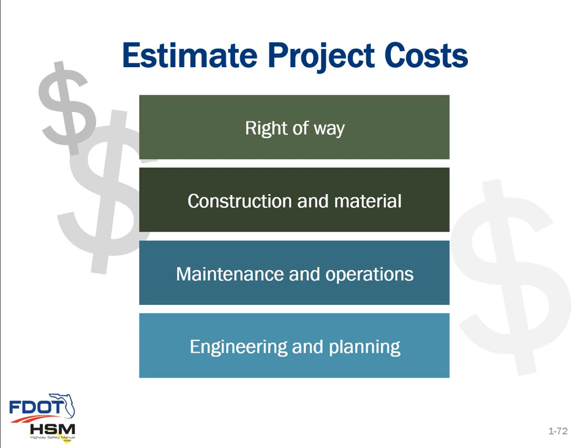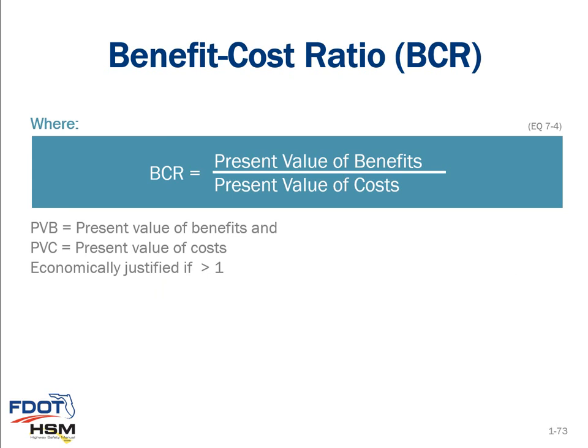Estimating project cost — the denominator of the benefit-cost ratio — includes elements such as right-of-way, construction and materials, maintenance and operations, and engineering and planning. The benefit-cost ratio is the present value of benefits divided by the present value of costs, and it is typically justified if the ratio is greater than one.